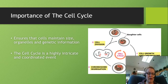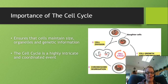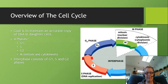The cell cycle keeps cells balanced. In a multicellular organism it's really important that we can maintain the same number of cells, replacing cells that are undergoing apoptosis, which we'll talk about in topic three.